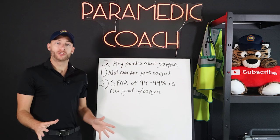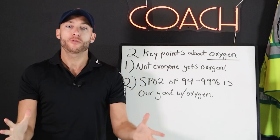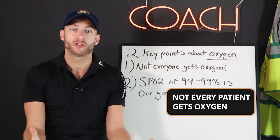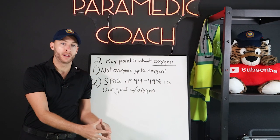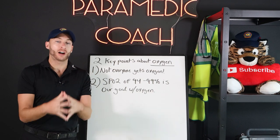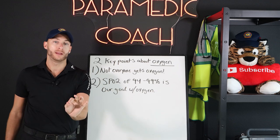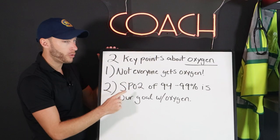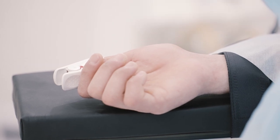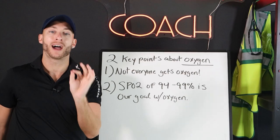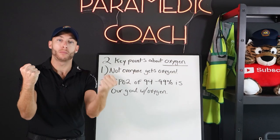With oxygen, there are two things to remember. Number one: not every patient gets oxygen. Just because someone has difficulty breathing doesn't mean giving oxygen is the answer. The SpO2, the pulse oximetry — that little probe you place on the patient's finger — measures how well oxygen is binding with the red blood cells.